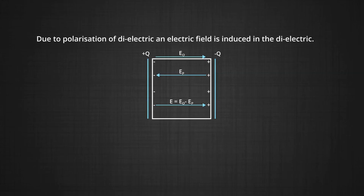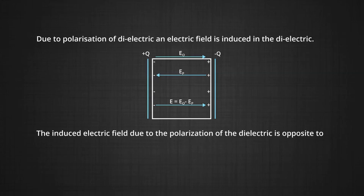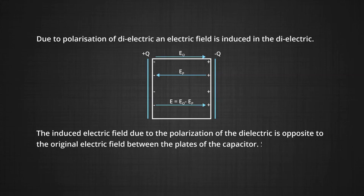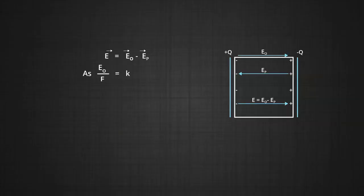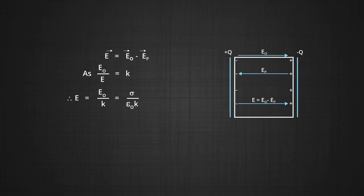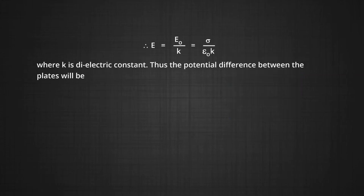As is clear from the discussion, whether the dielectric is polar or nonpolar, in both cases the induced electric field due to polarisation is opposite to the applied field. Thus, the induced electric field due to the polarisation of the dielectric is opposite to the original electric field between the plates of the capacitor. So, the net electric field between the plates: as we know that E₀ by E is equal to K, the dielectric constant, thus E is equal to E₀ by K, which is equal to sigma by epsilon naught times K, where K is the dielectric constant.